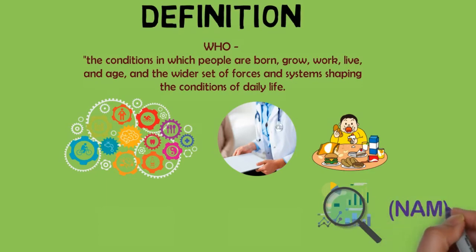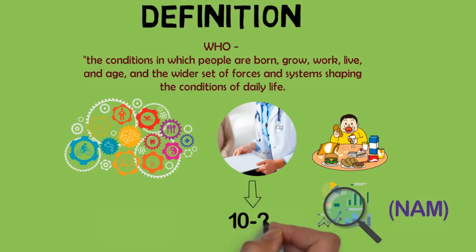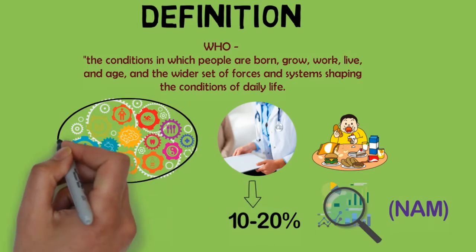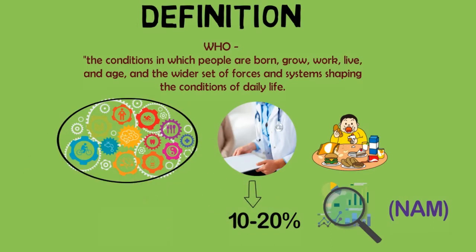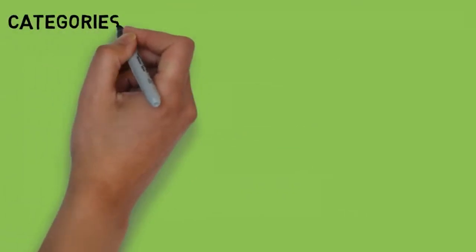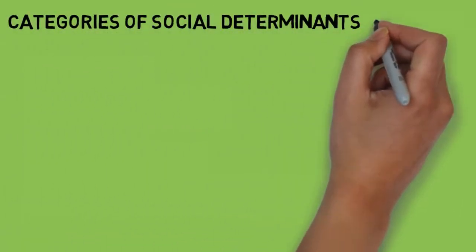A study cited by the National Academy of Medicine found that medical care itself only accounted for 10 to 20 percent of the contributors to people's health outcomes. By contrast, the many social determinants of health play a much bigger role in influencing a person's health, making up 80 to 90 percent of the contributing factors.